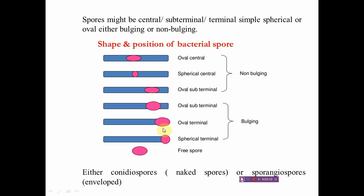When the spore thickness is greater than that of the mother cell (bacillus), the cells are called bulging spores. Sometimes spores are naked and are called conidiospores; sometimes they are enveloped within a sac, in which case they are called sporangiospores.